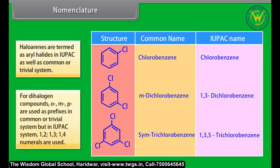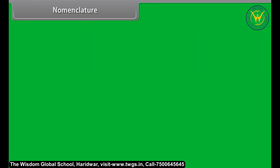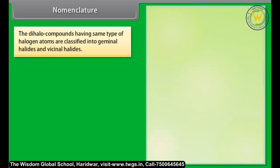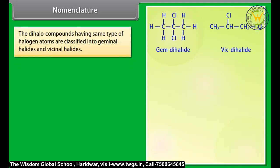For dihalogen compounds, ortho, meta, and para are used as prefixes in the common or trivial system, but in the IUPAC system the numerals 1,2; 1,3; and 1,4 are used. Dihalo compounds having the same type of halogen atoms are classified into geminal halides and vicinal halides.